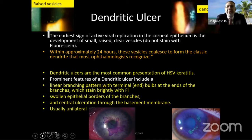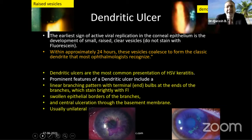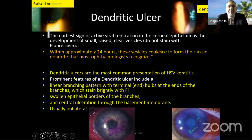The borders of the branches are swollen and the ends are bulbous. In the center there is a central ulceration which goes through the basement membrane. These are usually unilateral. To summarize the classical features: terminal bulbs, bright staining at the borders of the branches, a central ulceration at the base going right up to the basement membrane, and typically unilateral presentation.